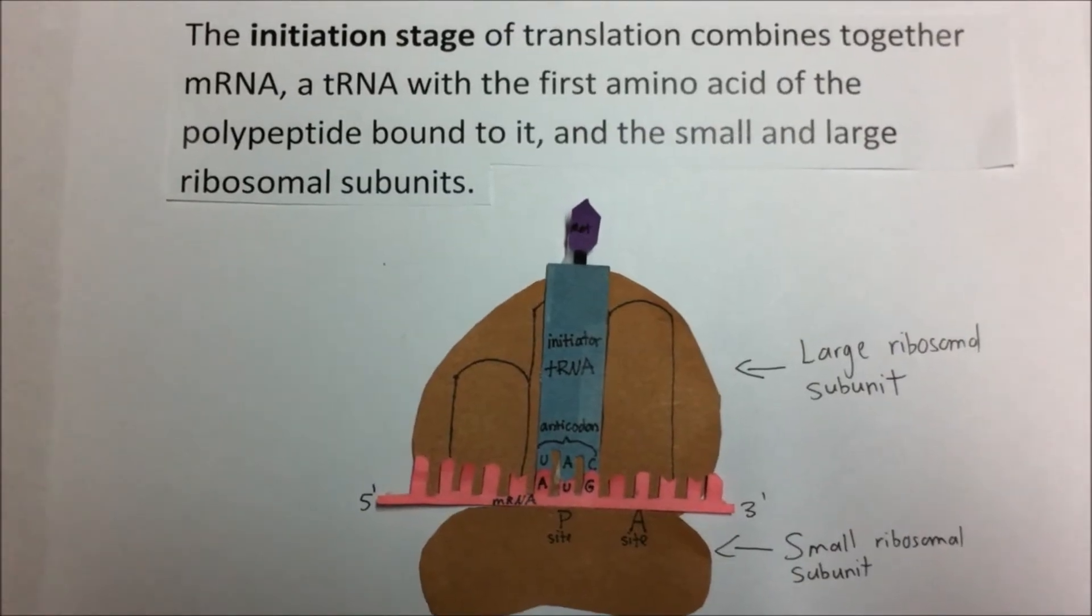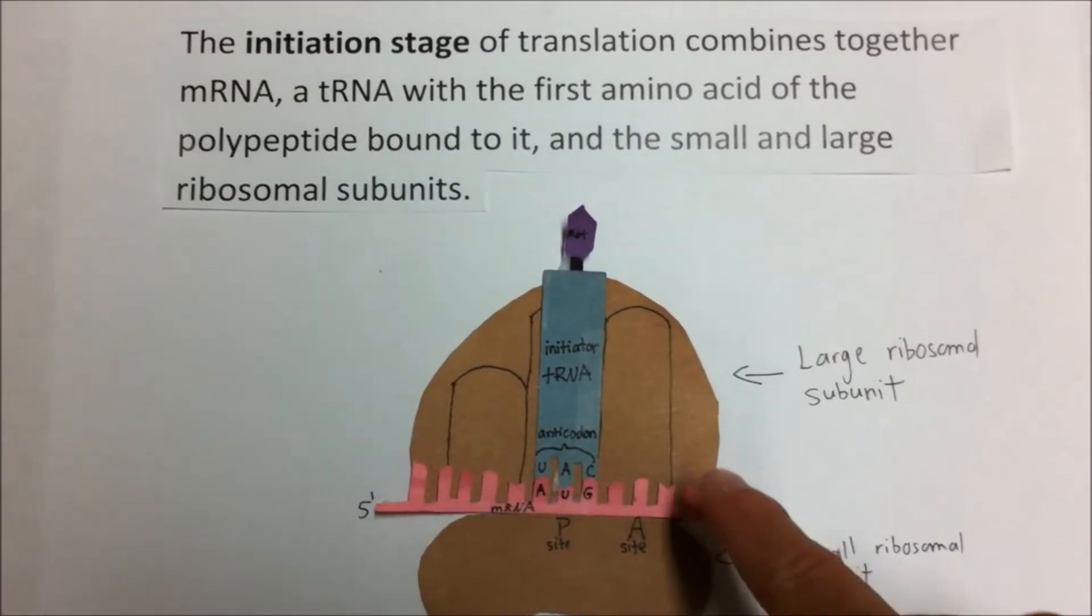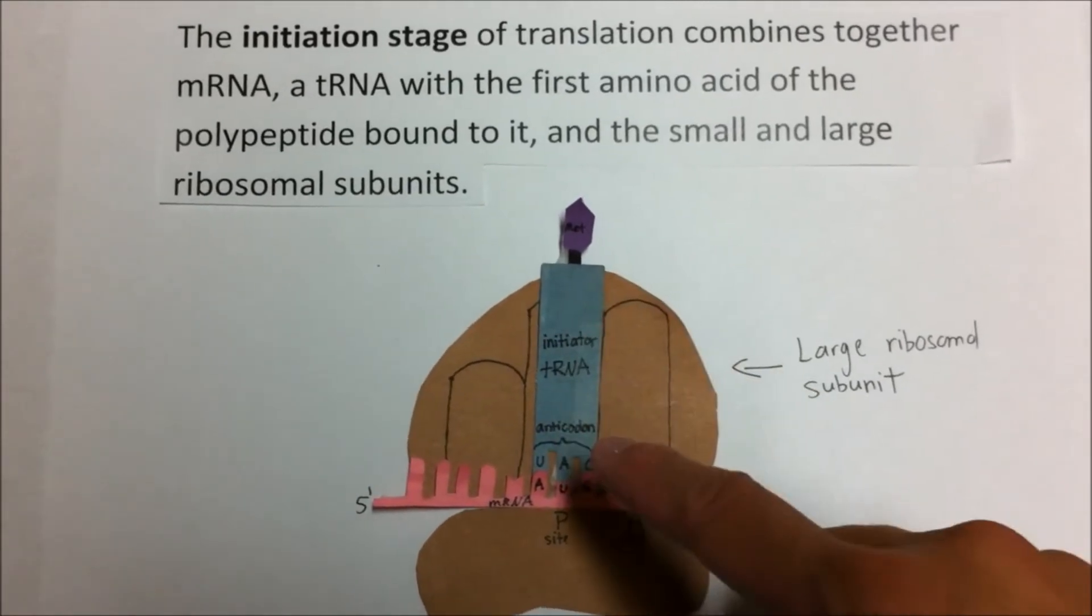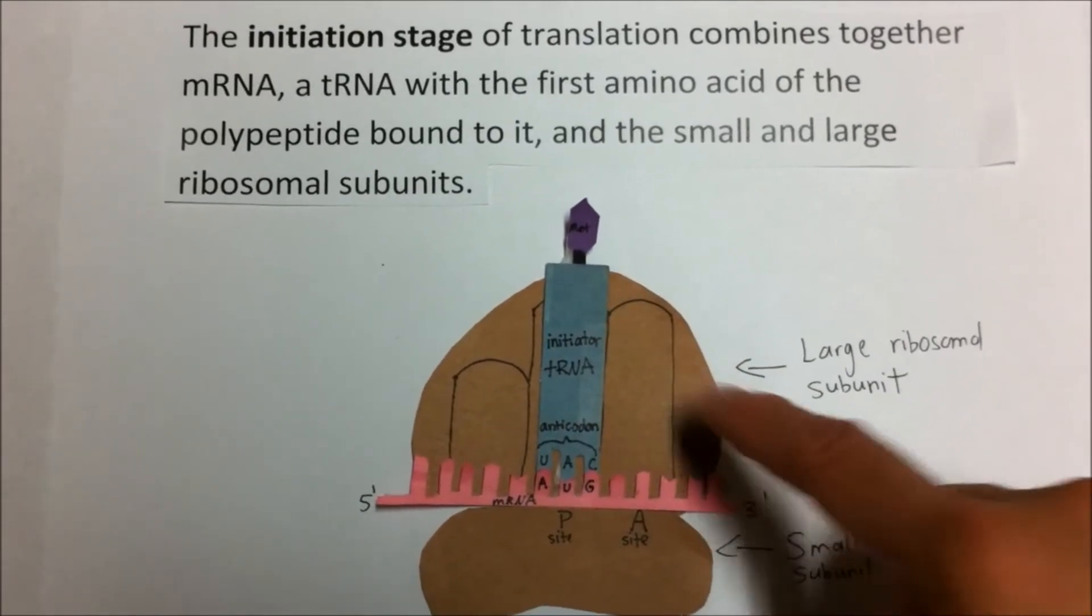The initiation stage of translation combines together mRNA, the tRNA with the first amino acid, and the small and large ribosomal subunits.